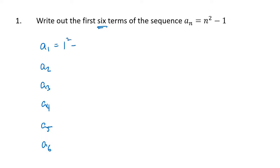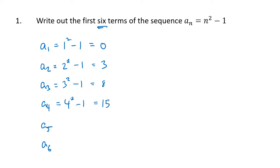So a1 is 1 squared minus 1, which is 0. a2 is 2 squared minus 1, which is 3, and so on. That's all we're being asked to do — just plug these numbers into the formula we're given. The sixth term is 6 squared minus 1, which is 35.